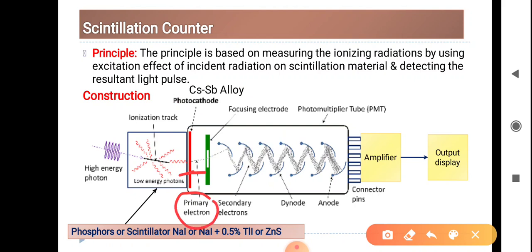These are called the primary electrons. Primary electrons are made to incident over the focusing electrode. Secondary electrons are produced due to photoelectric effect, and these are multiplied—the number of electrons will increase.